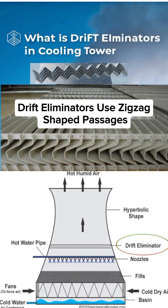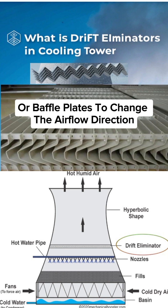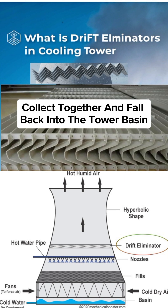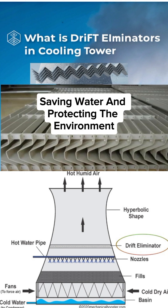Drift eliminators use zigzag-shaped passages or baffle plates to change the airflow direction. When moist air passes through, water droplets hit the surfaces, collect together, and fall back into the tower basin, saving water and protecting the environment.